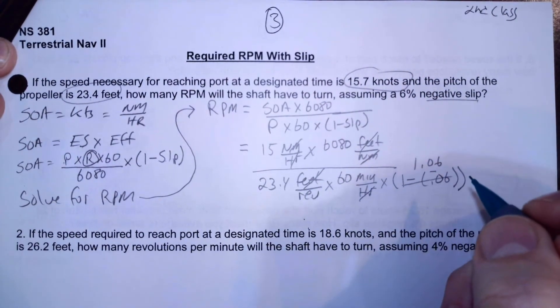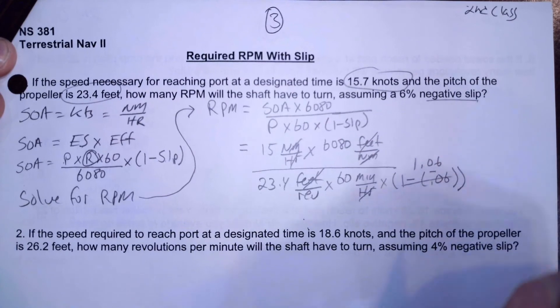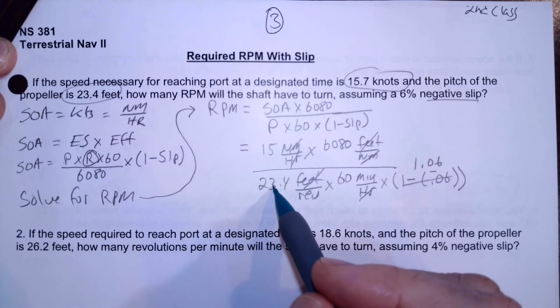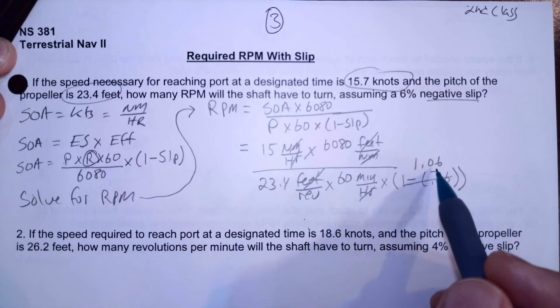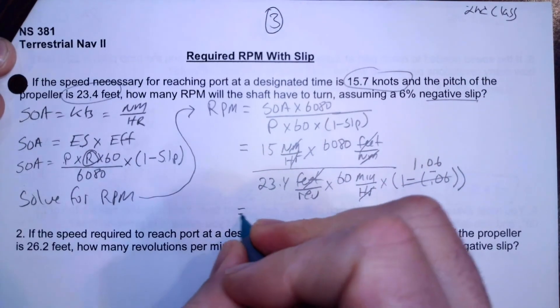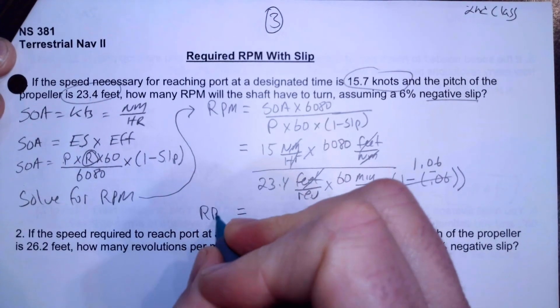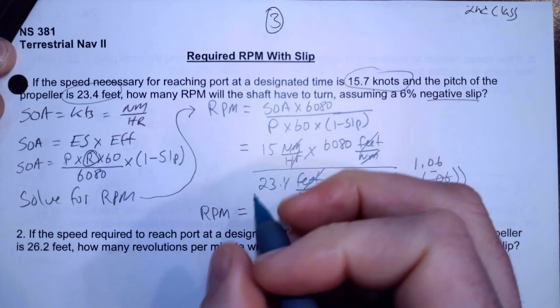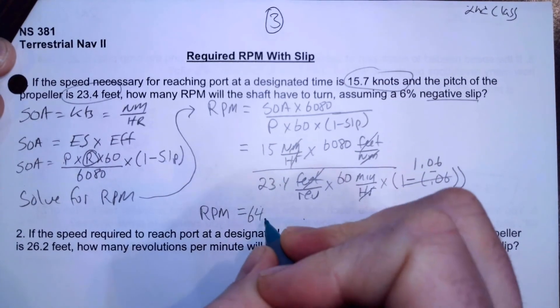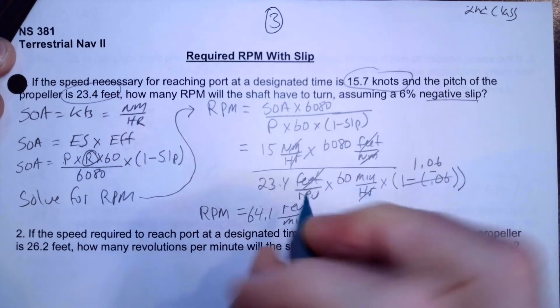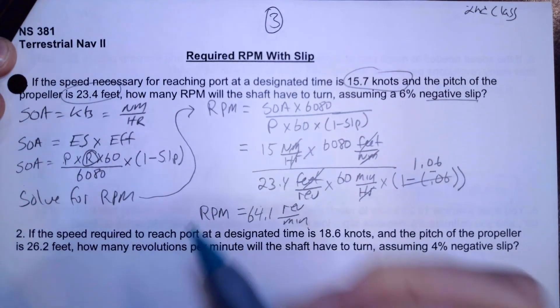All right. So, great. When I take 15.7, multiply it by 6080, and I divide that by 23.4, divide that by 60, divide that by 1.06. When I do all that math, you should end up with an RPM which equals 64.1 revolutions per minute. That's the solution to that problem right there.